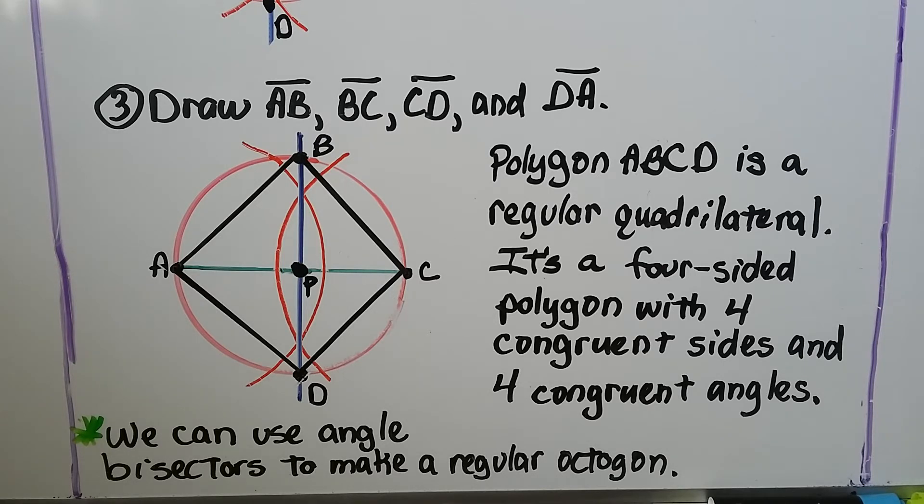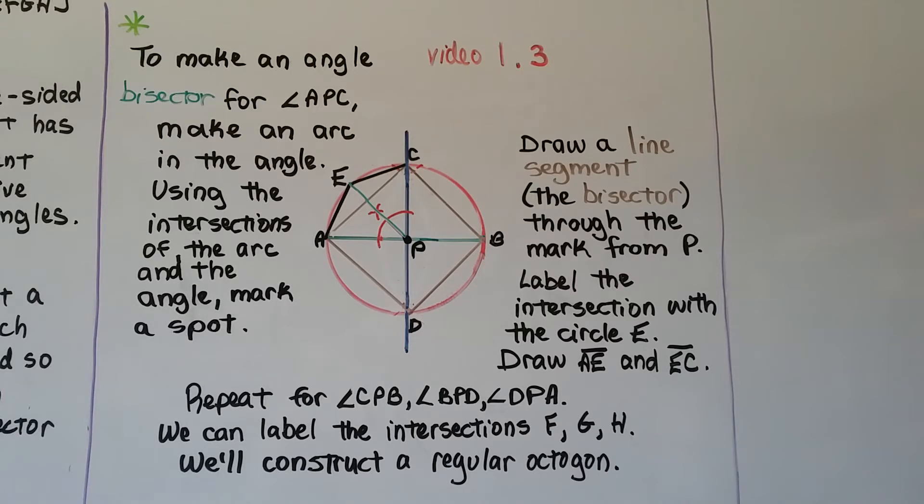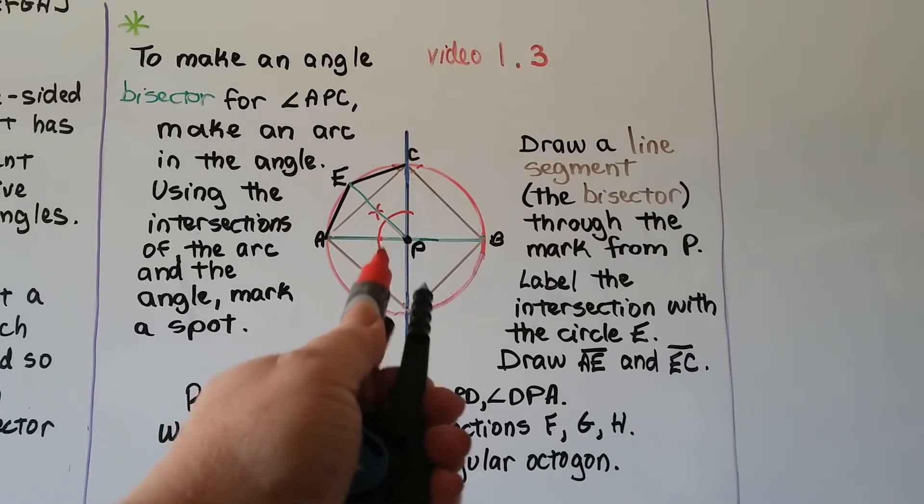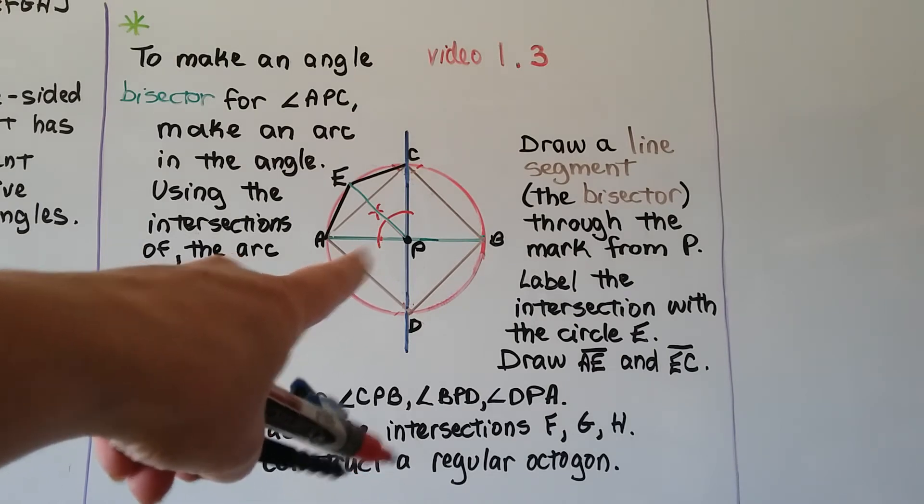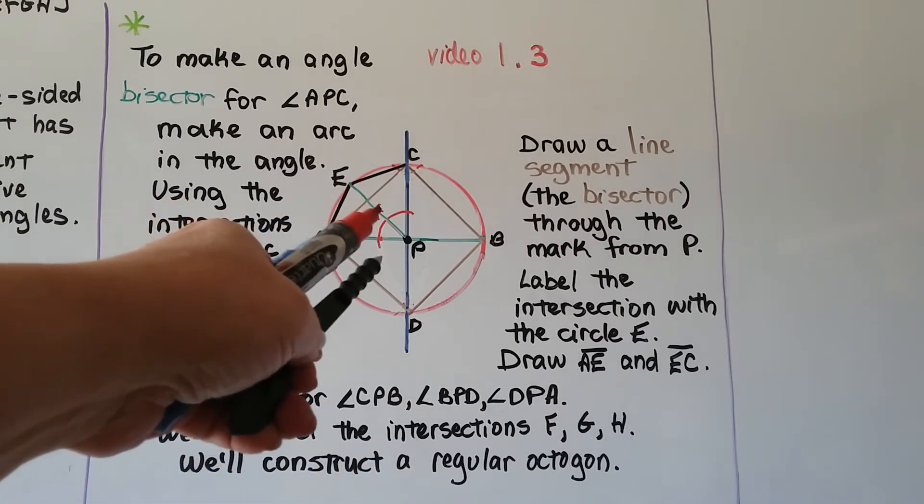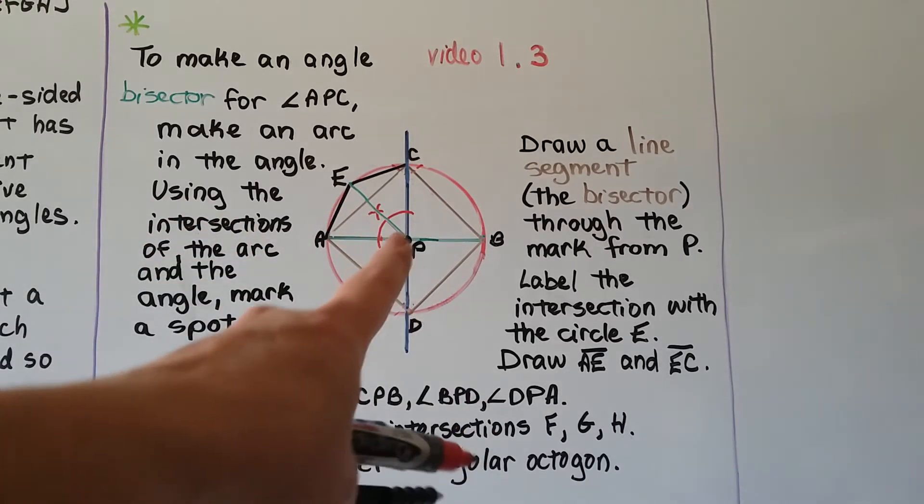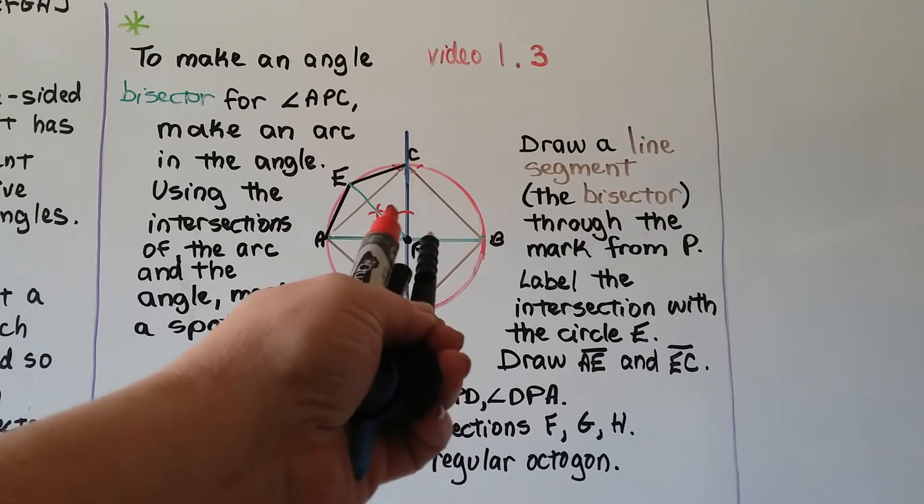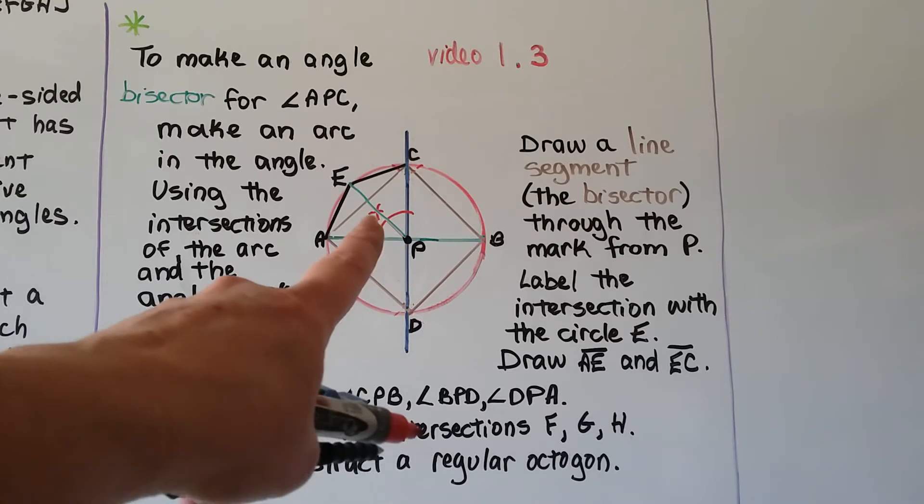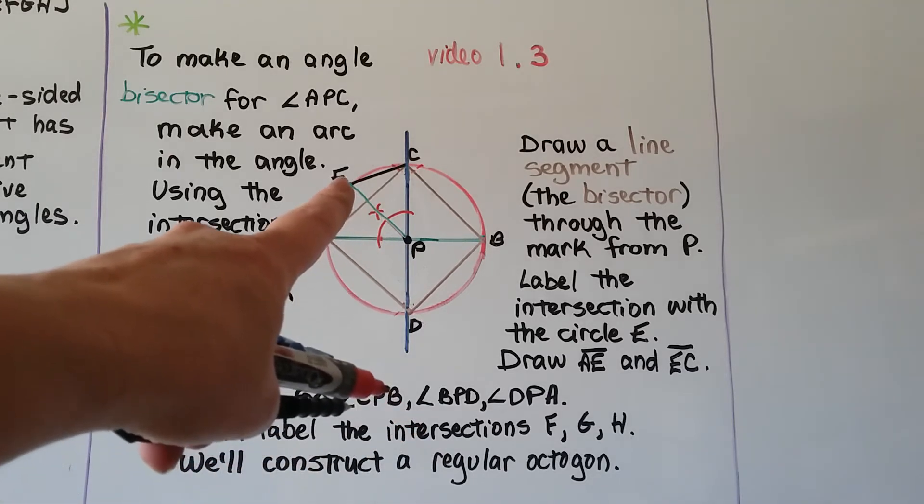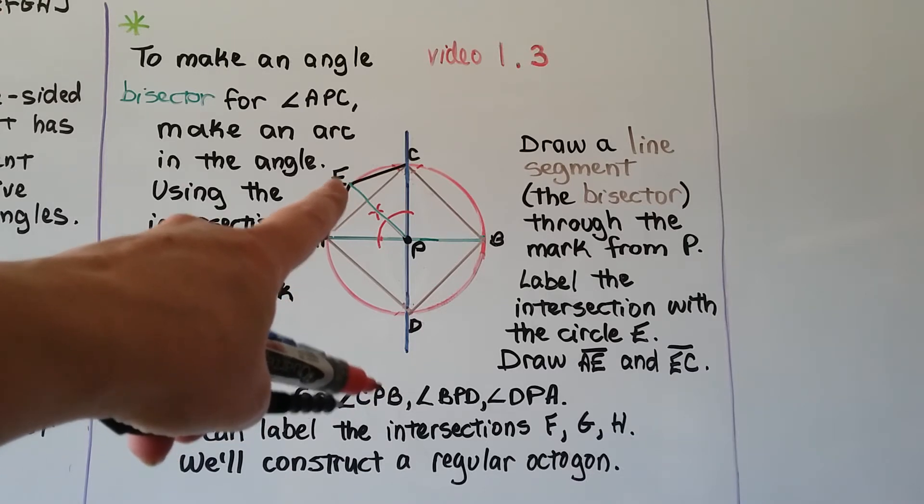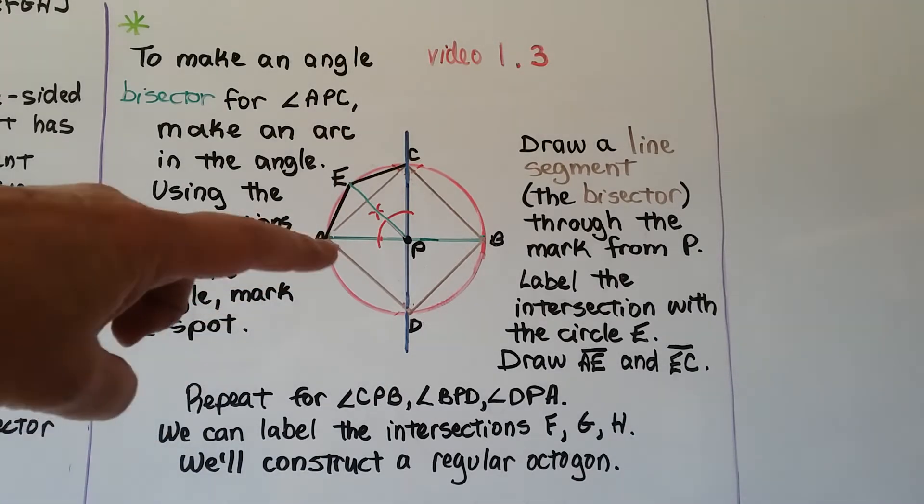We can use angle bisectors to make a regular octagon from this drawing. To make an angle bisector for angle ABC, we learned how to make angle bisectors in Chapter 1 video 1.3. We make an arc from P like this, a little arc. Where it intersects AP, we put our compass and make a little X here. Then we put it on CP right here where it intersects and make our other cross for our X. From P through the intersection of this little X, we go to the end of the circle here. Where it intersects, we can mark that E and draw segments AE and EC.